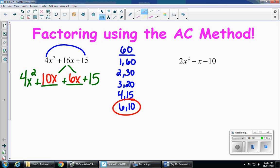Now that I have four terms, I'm going to factor by grouping. So the first two pieces, 4x squared and 10x, what do they have in common? I can take out a 2x from each piece and I would be left with 2x plus 5.